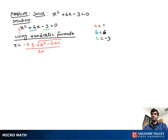Now using the quadratic formula, x equals negative b plus or minus square root of b squared minus 4ac, over 2a. Substituting the values of a, b, and c, we get x equals negative 6 plus or minus square root of 6 squared minus 4 times 1 times negative 3, over 2 times 1.